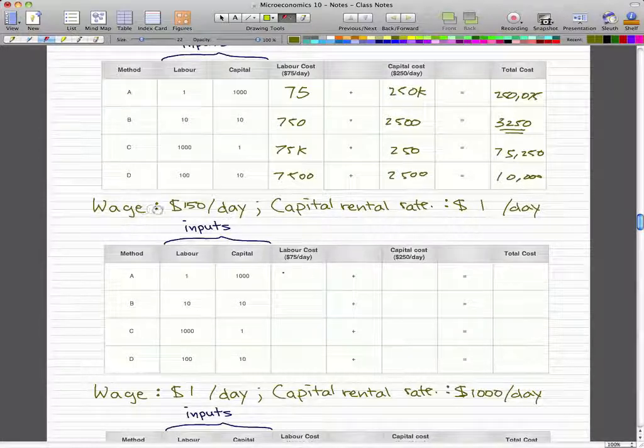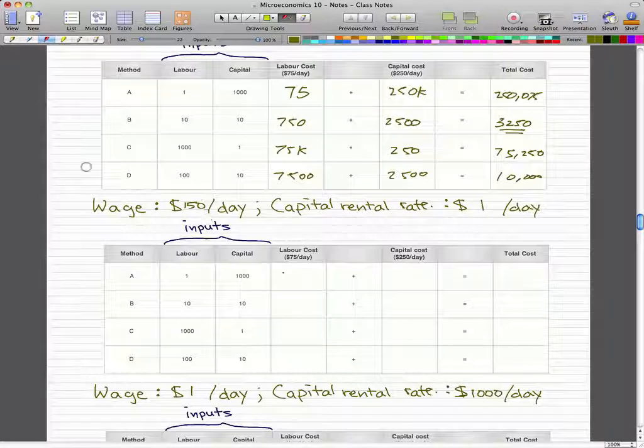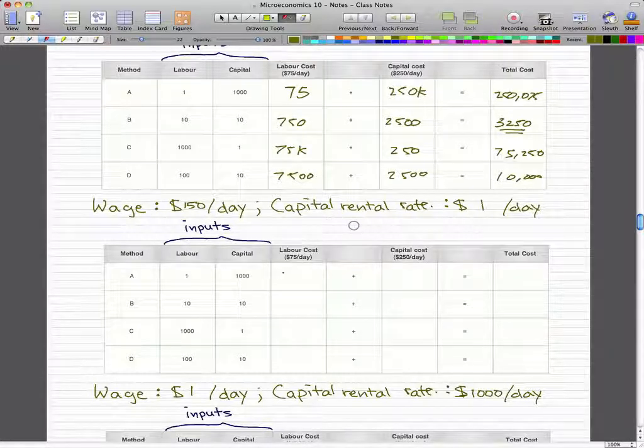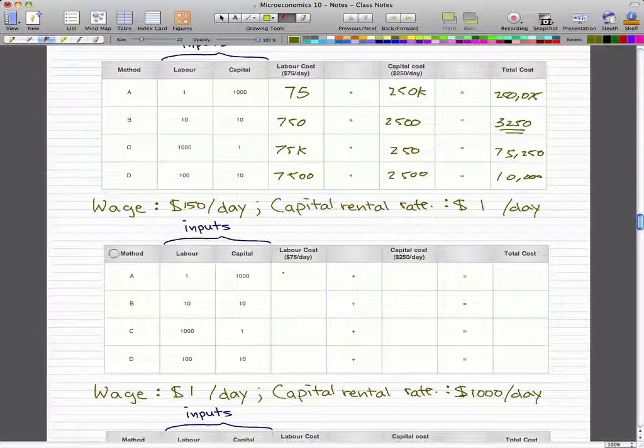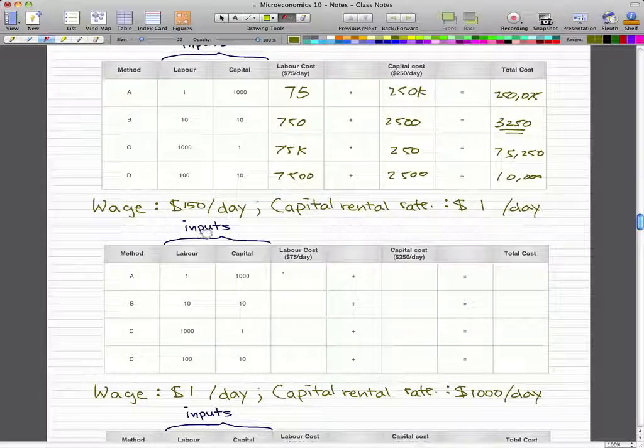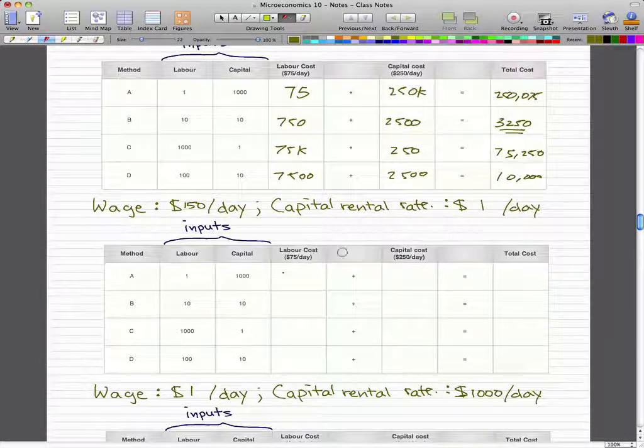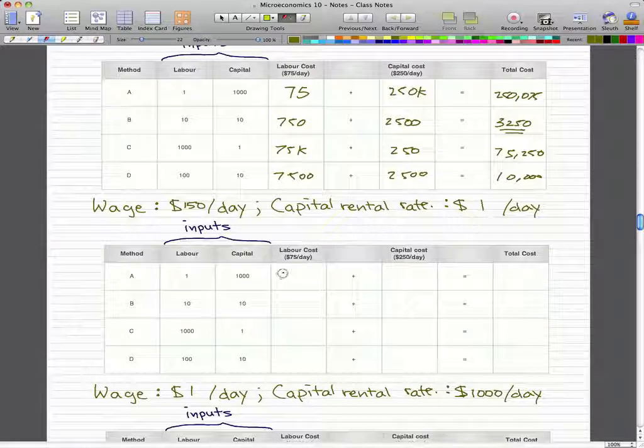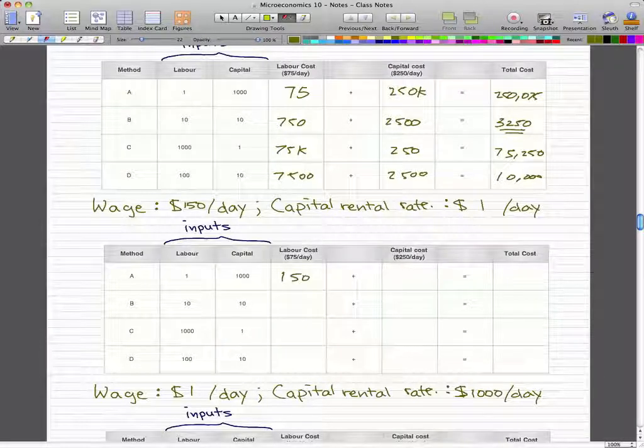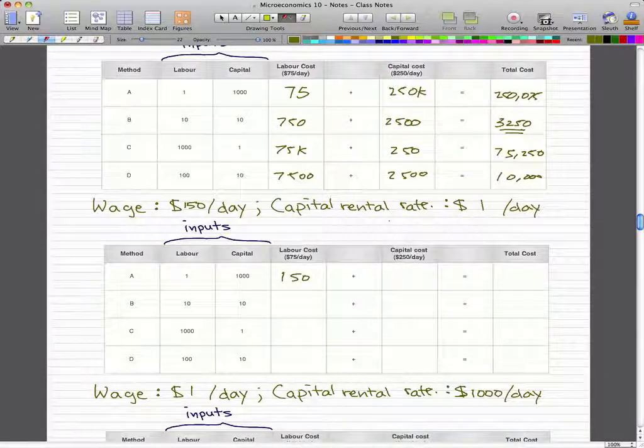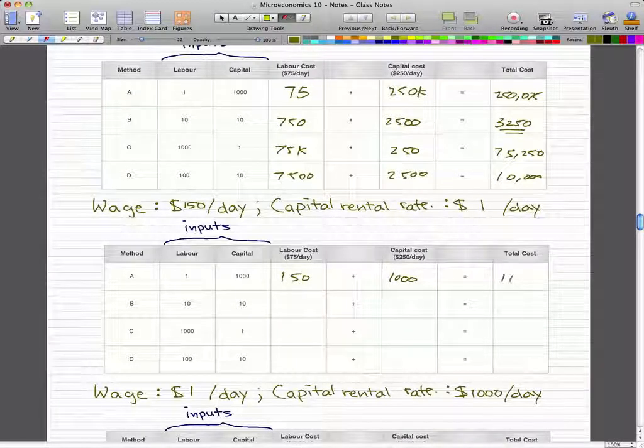So the wage was $150 per day, and the capital rental rate was $1 a day. So we take $150 times 1, and that'll give us $150. And capital rental rate is $1 a day, that'll give us $1,000. So the total cost is $1,150.